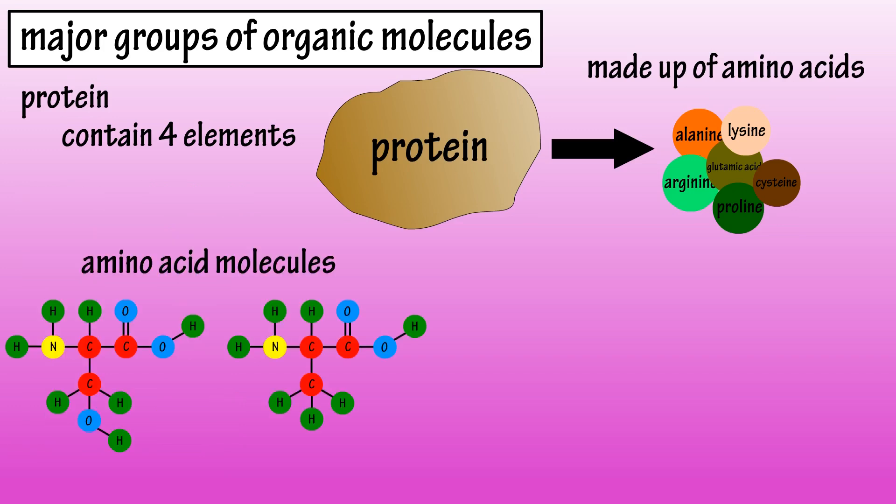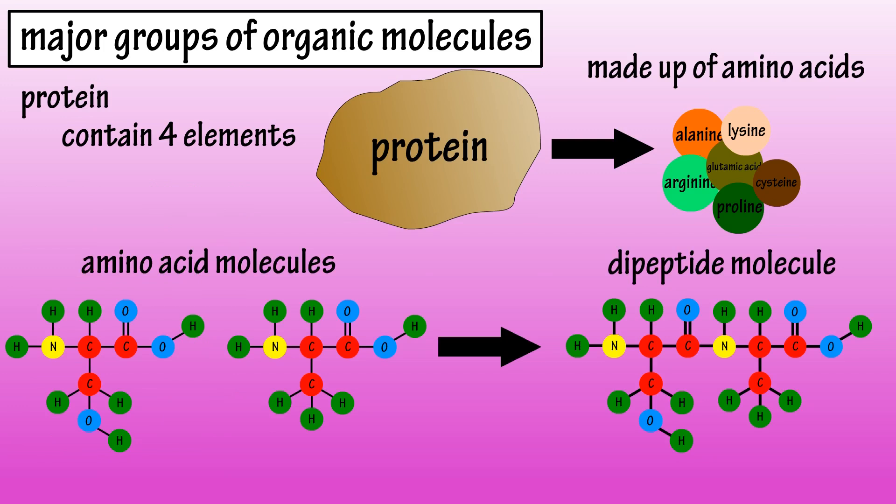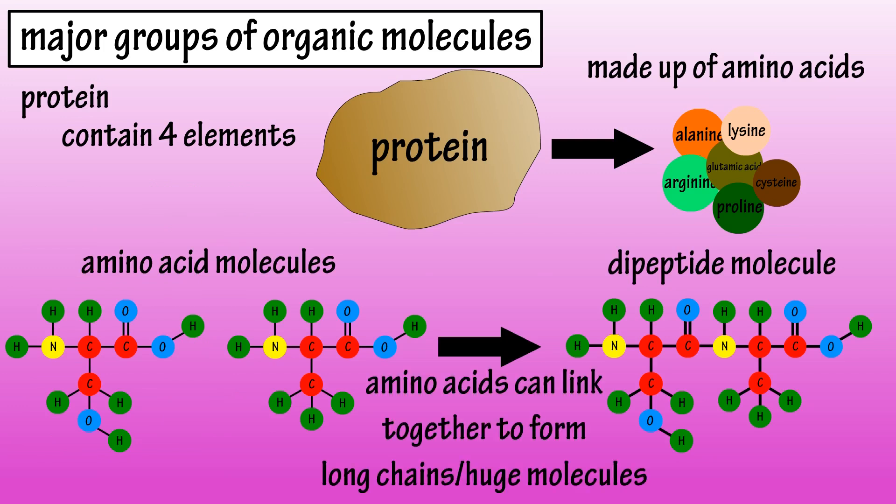Here are two different amino acid molecules. And here are these molecules bonded together to form a dipeptide. Amino acids can link together to form long chains. Typically, a protein consists of a hundred or more amino acids linked together.